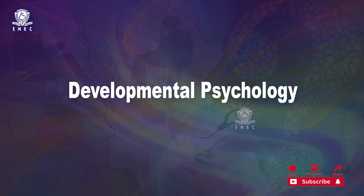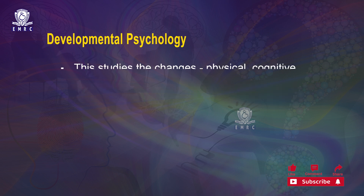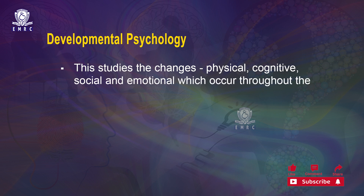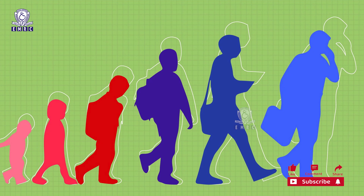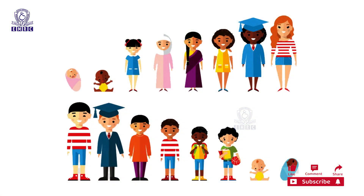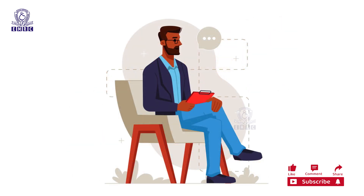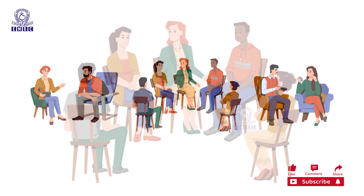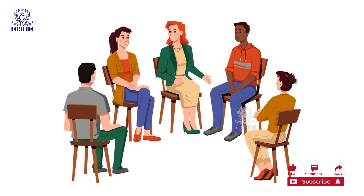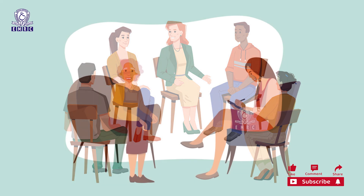The next branch is developmental psychology. This studies the physical, cognitive, social, and emotional changes which occur throughout the lifespan from conception to old age. The primary concern of developmental psychologists is how we become what we are. For many years the major emphasis was on child and adolescent development, but today an increasing number of psychologists show strong interest in adult development and aging as well.